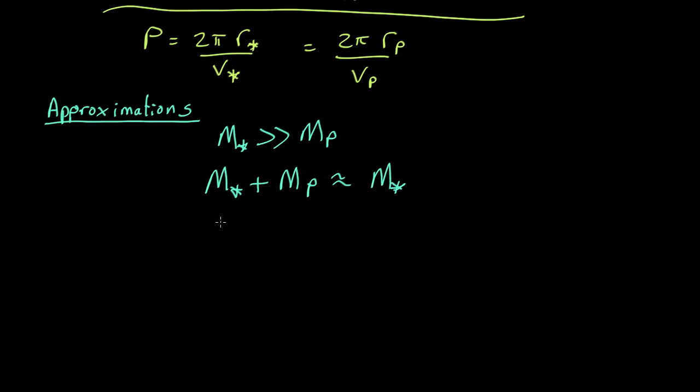What it also means is that the distance between the two objects, r star plus r p, is going to be about equal to r p.